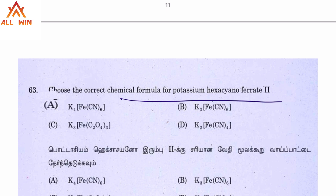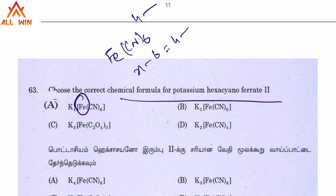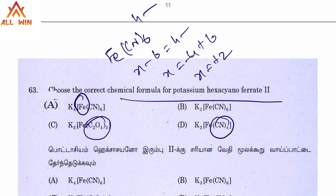Choose the correct chemical formula for potassium hexacyanoferrate. The oxidation state of the metal needs to be determined. For FeCN6 with a 4- charge: x + 6(−1) = −4, so x = +2. The oxidation state is +2, making this potassium hexacyanoferrate(II). Select the hexa-cyano option A.